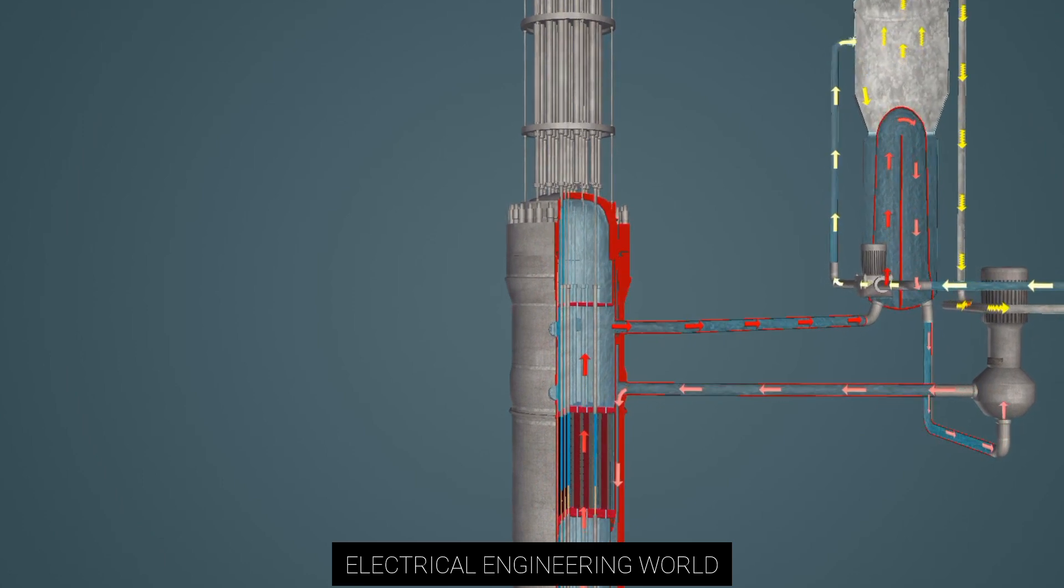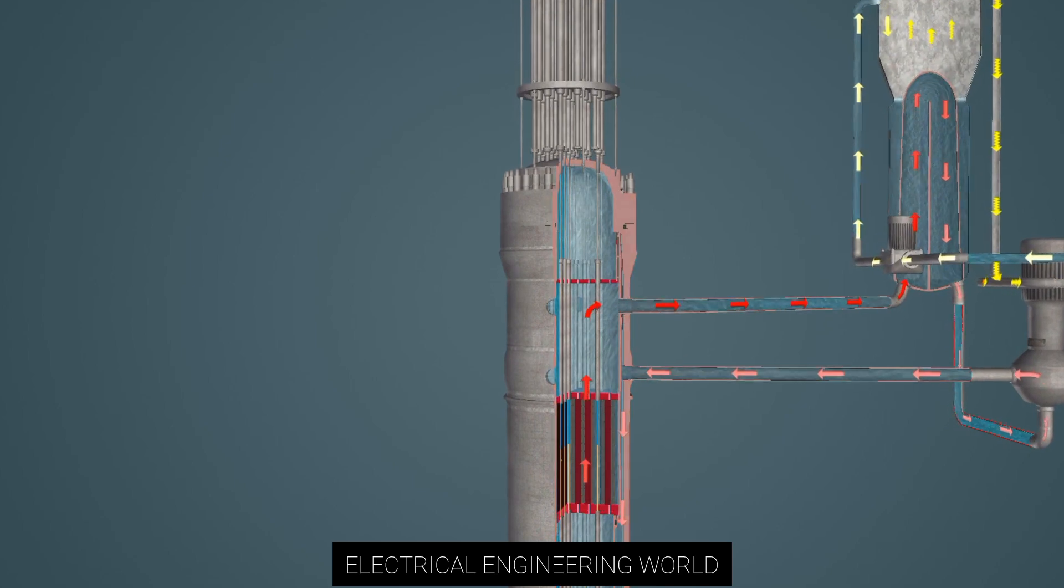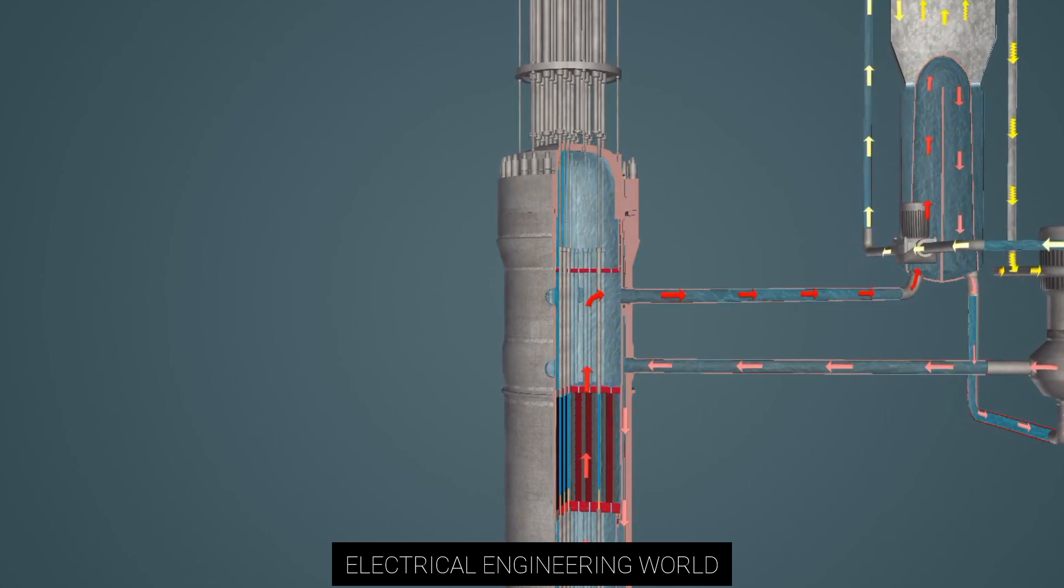The reaction can be accelerated by pulling the control rods outwards from the fuel assembly, and slowed down by pushing them further in.